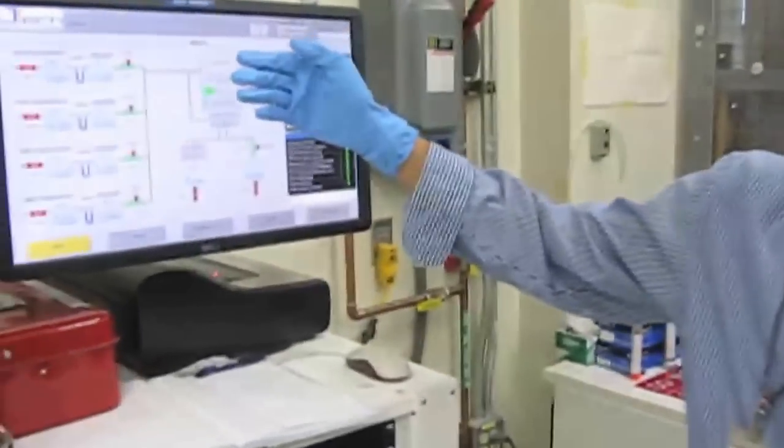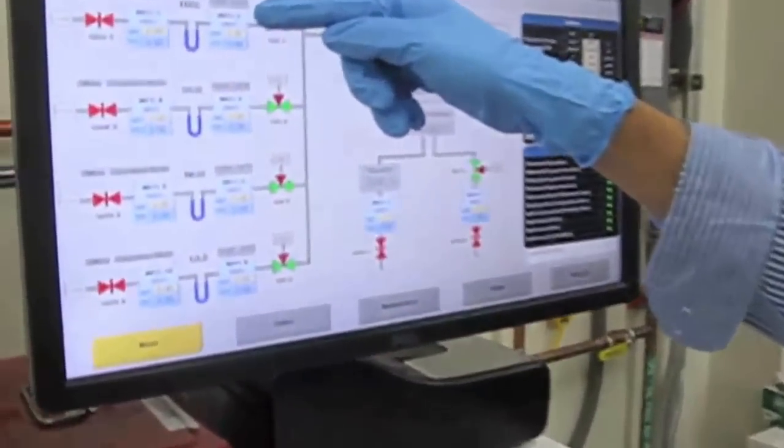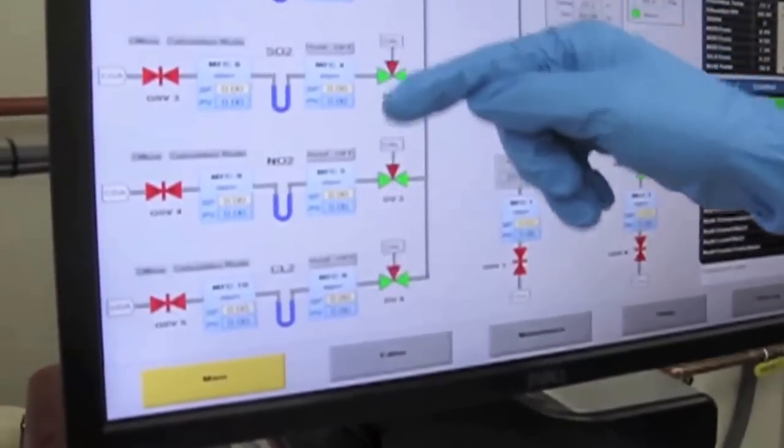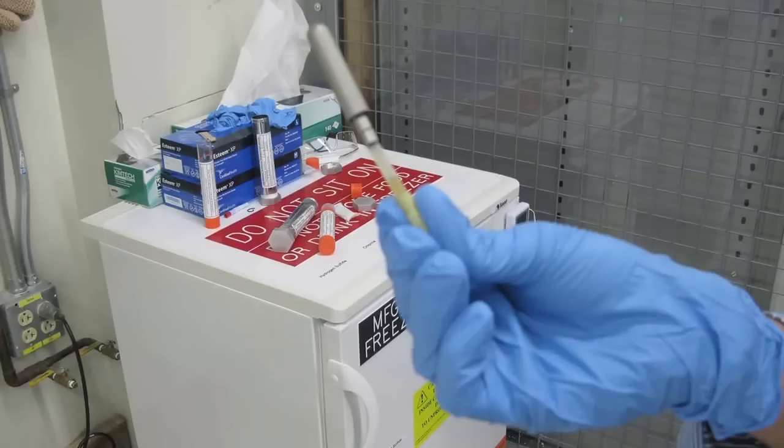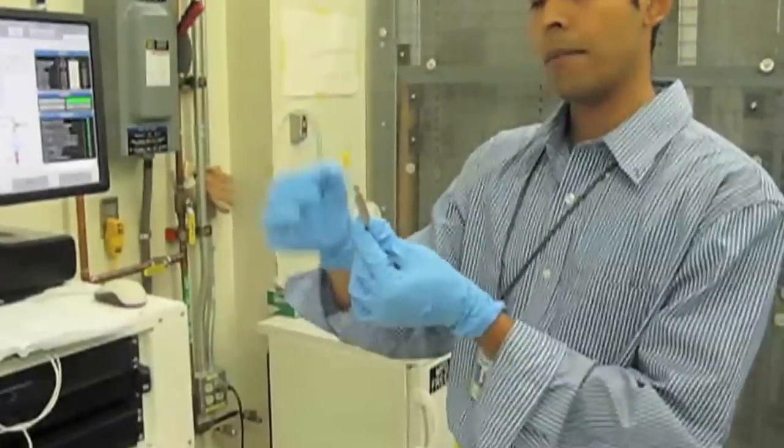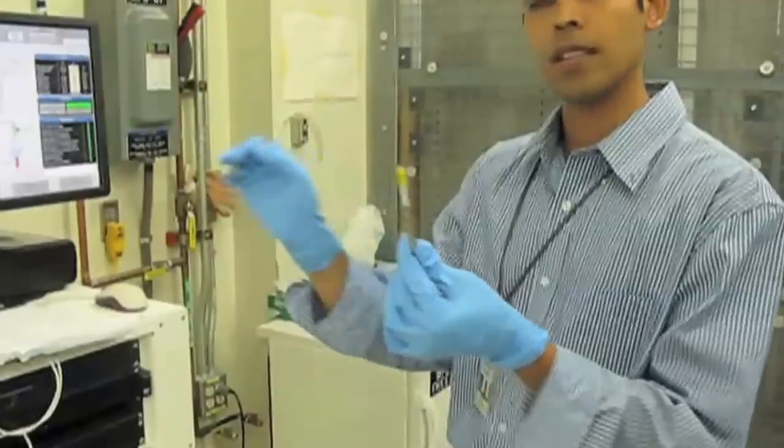You can see from the interface we are introducing four different gases like H2S, SO2, NO2, and Chlorine. We are sourcing the gas through something called a permeation device. This device has a membrane, a polymer membrane which uses the gas under temperature.